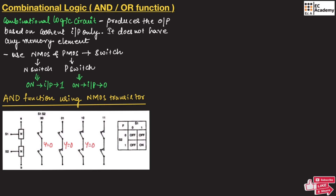When both switches have input 1, switch S1 and switch S2 will both be ON, creating a path for current flow — output is 1. So the AND operation is shown in this truth table: input 00 gives output 0, input 01 gives output 0, input 10 gives output 0, and input 11 gives output 1, which represents the AND operation.